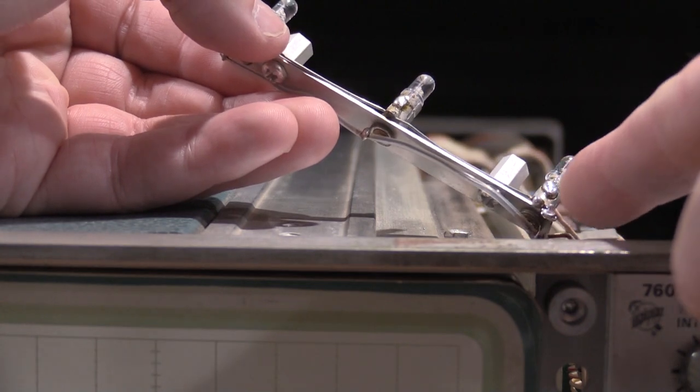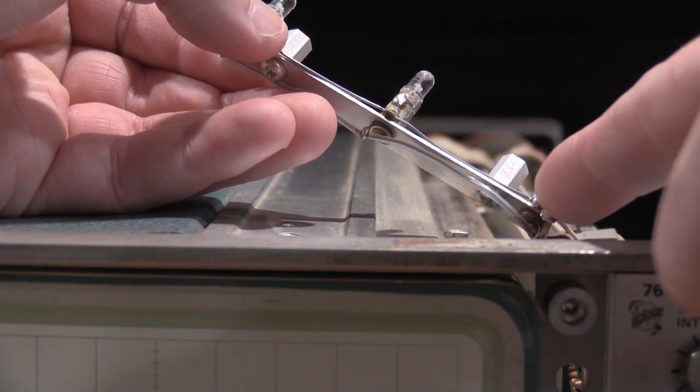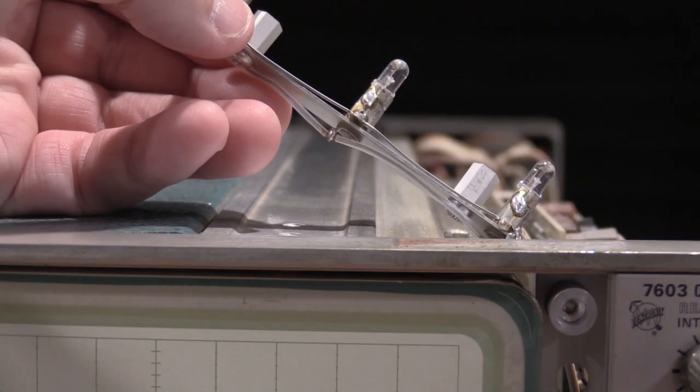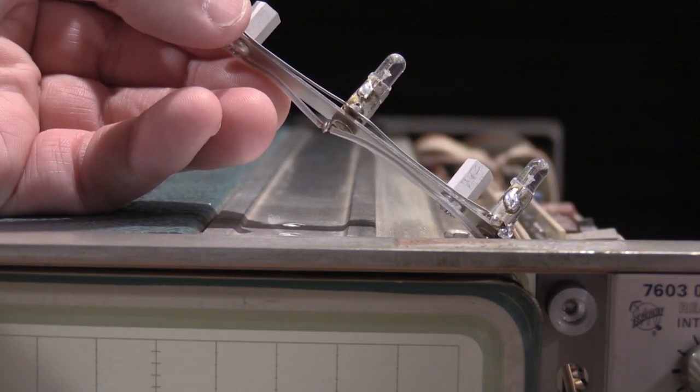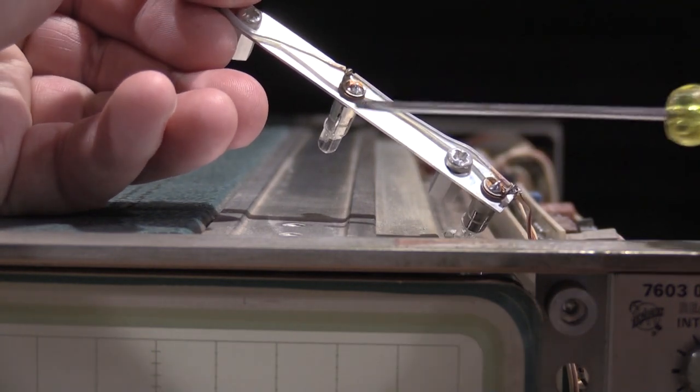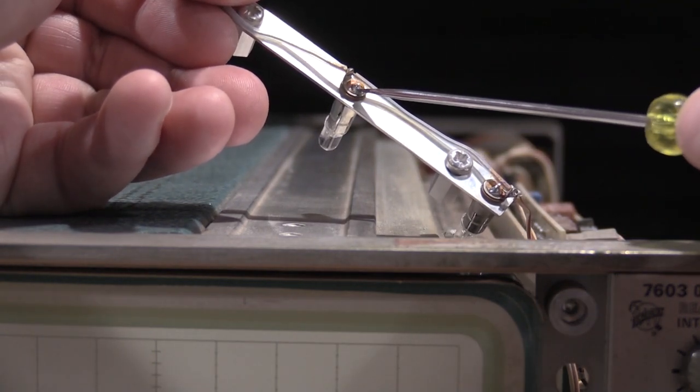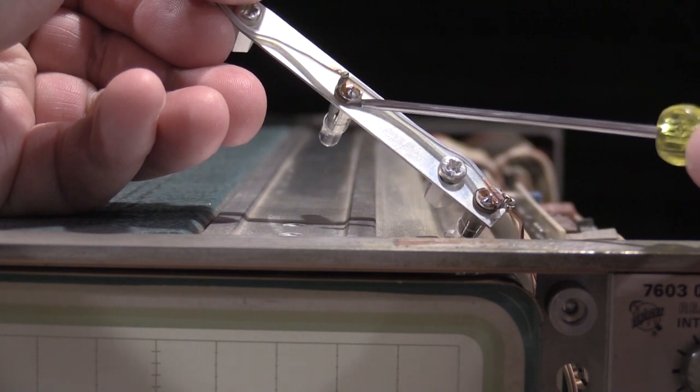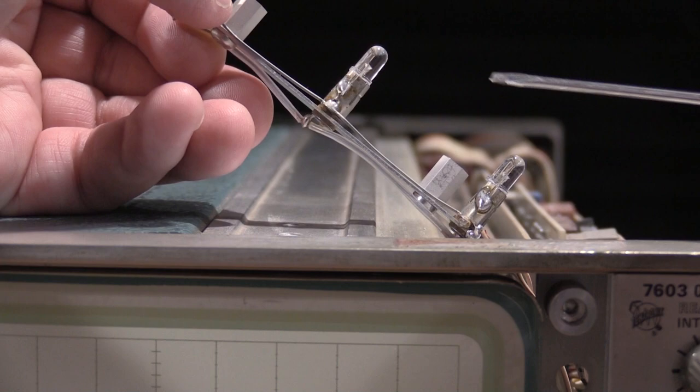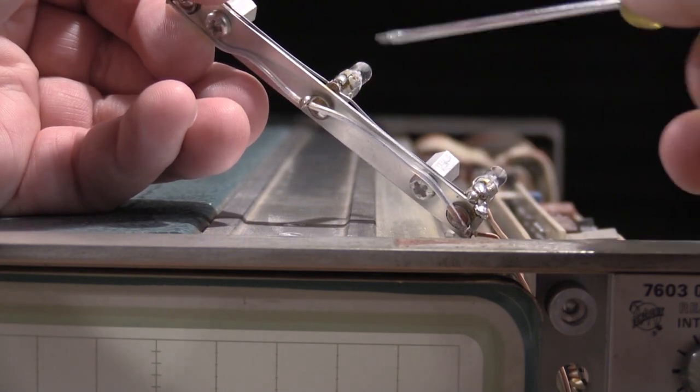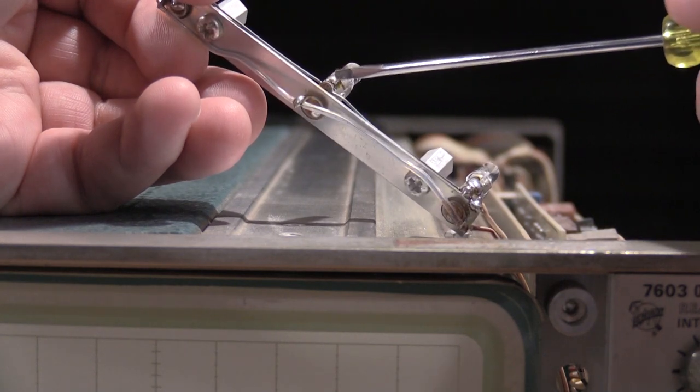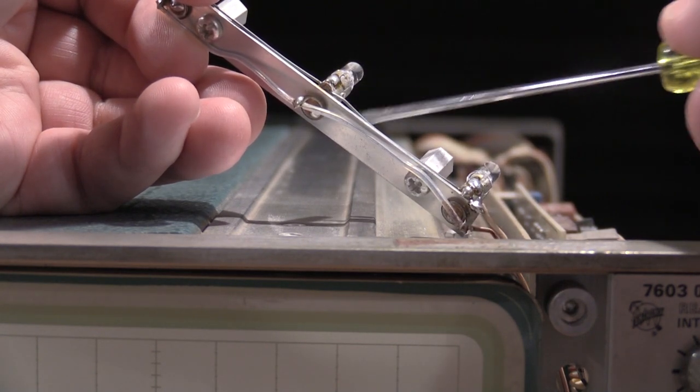The way these are set up is initially there's a spring in the bottom of the lamp holders. I pull that spring out and that opens the hole up for the positive lead of the LED to come out and then the negative lead of the LED is soldered to the outside of the enclosure. This is a case ground so it's positive on the pin, negative on the barrel.